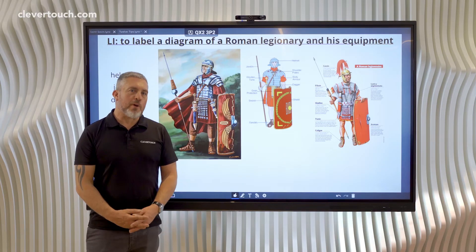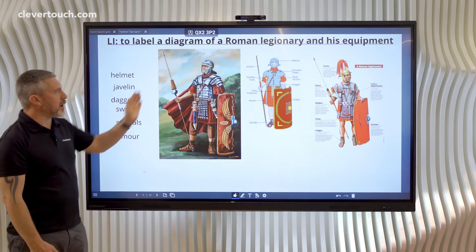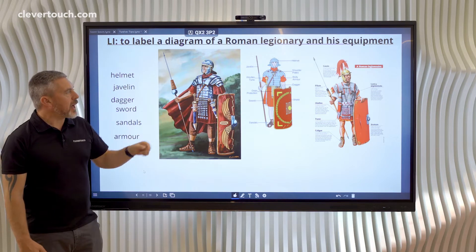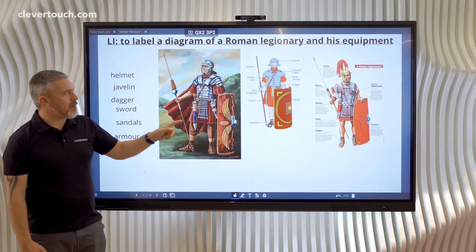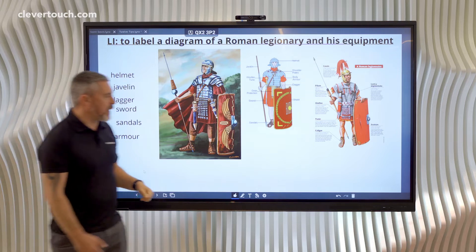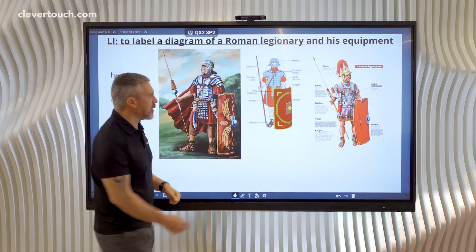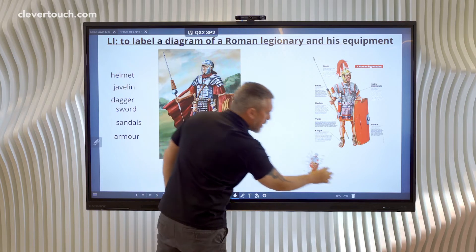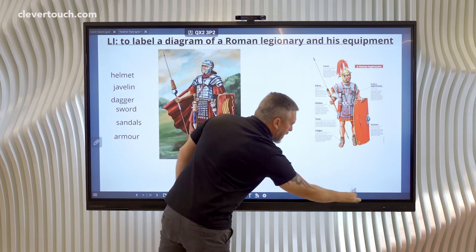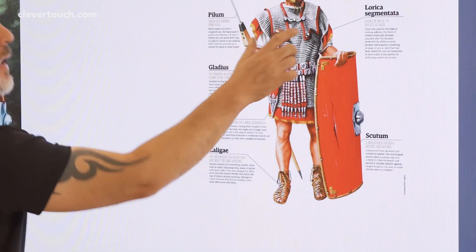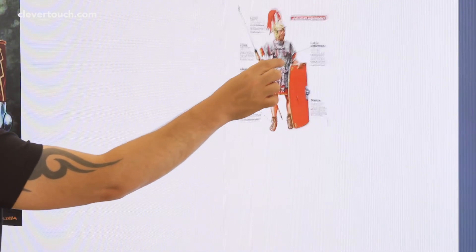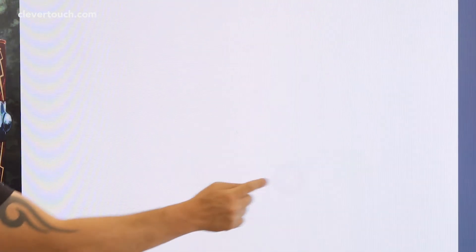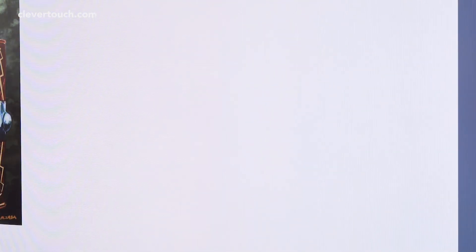So I've got my six labels and the image that I want to label. I can now get rid of the two diagrams that helped me do the research. To do that I can select the item and drag it down to the bin, and I can also go to the three dots and select the bin there as well.